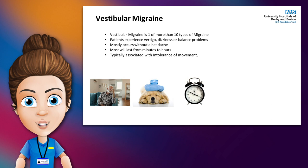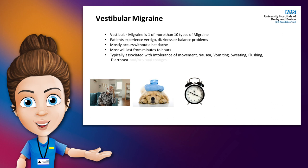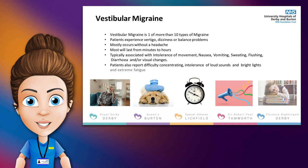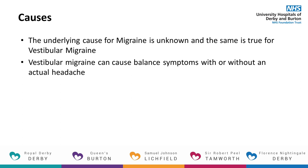A vestibular migraine is typically associated with intolerance of movement, nausea, vomiting, sweating, flushing, diarrhoea and or visual changes. Many patients also report difficulty concentrating, finding loud sounds and bright lights uncomfortable and extreme fatigue. The underlying cause for migraine is unknown and vestibular migraine is no different but it seems to result from confused pathways in the brain that control information about pain and balance.